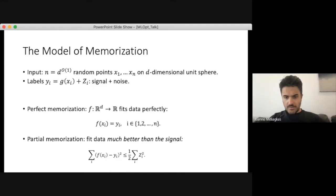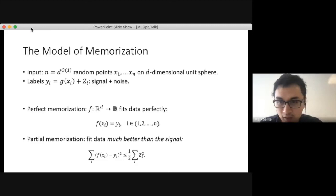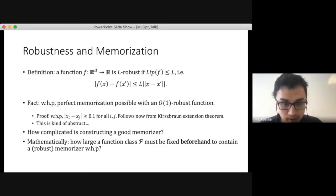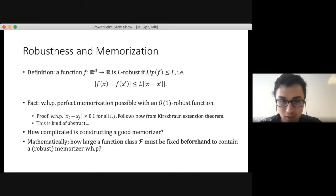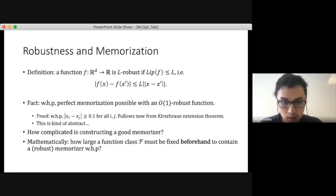People are encouraged to ask questions — you can use the hand-raise button or type in the chat. Now, the next thing we need to think about is robustness. We say the function f we learn is robust if it has a small Lipschitz constant: if we change the input x to a nearby x', then the output doesn't change much — by at most a small multiple of how much we changed the input.